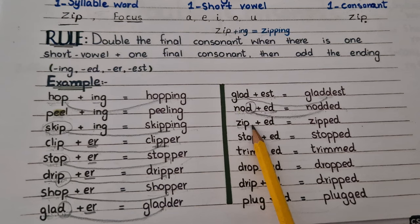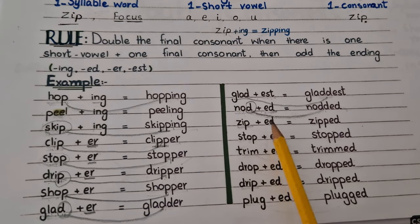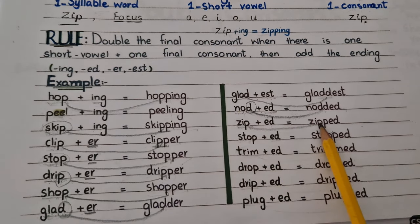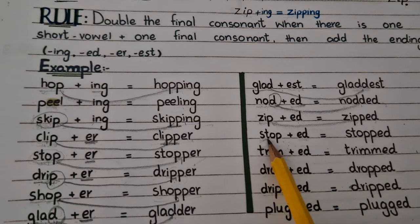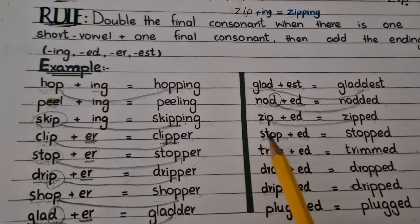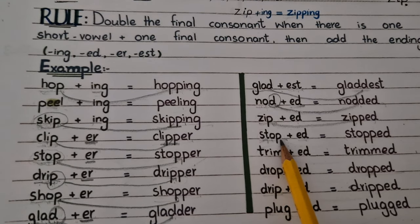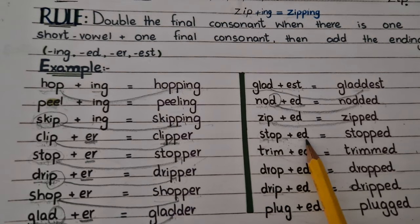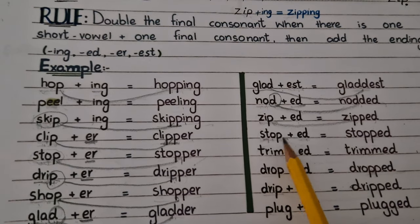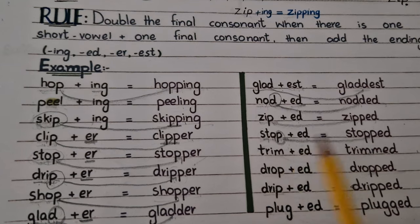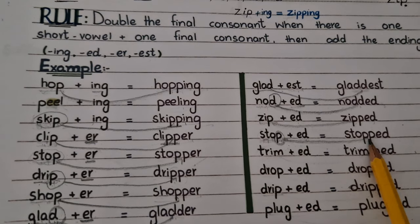Same — 'zip'. When we add a suffix at the end of the word, it will become 'zipped'. 'Stop' is a one-syllable word and has one short vowel and a final consonant. So when we add a suffix at the end of the word, we will double the final consonant. 'Stop' becomes 'stopped'.